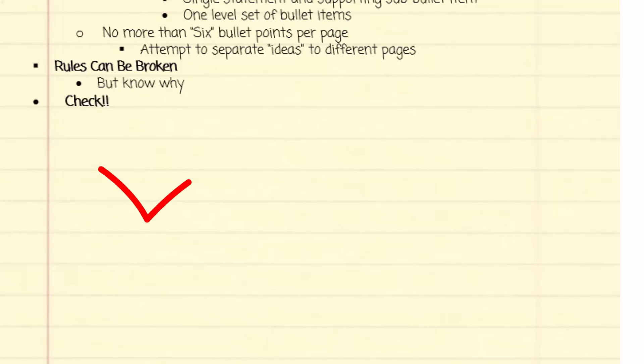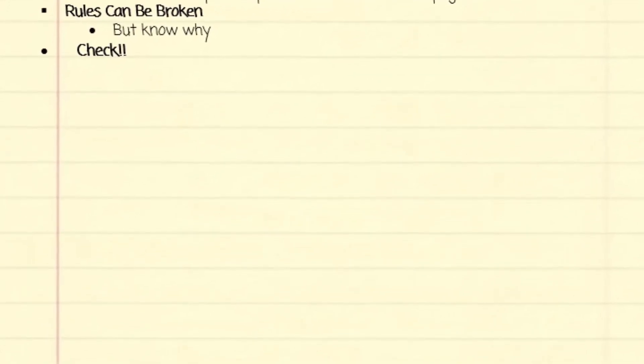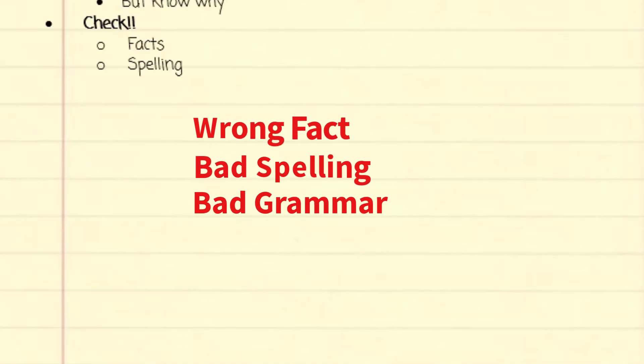Check, check, check, and check again. This phase is critical. A fabulously constructed presentation that is superbly crafted and elegantly designed can be destroyed by a single mistake. A wrong fact, a misspelled word, bad grammar can sink your credibility.